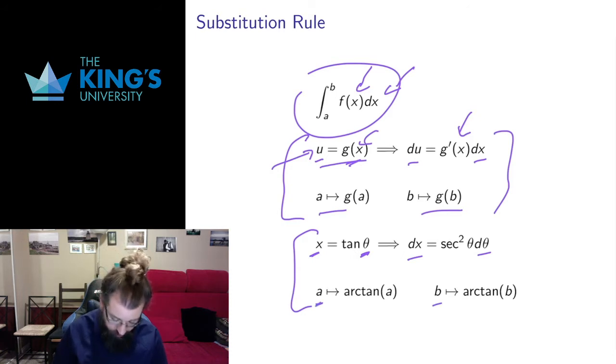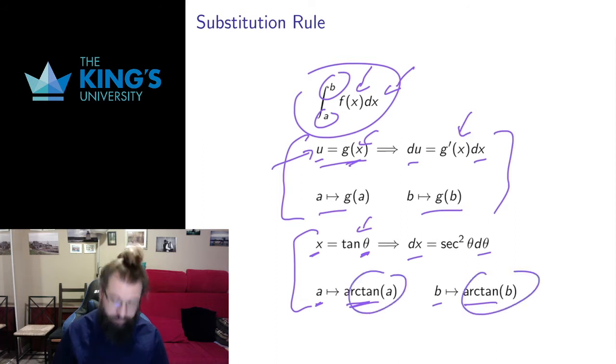So to change the bound here, I need the inverse of the substitution, because these are the bounds in the original variable, these are going to be the bounds in the new variable, and the new variable being the independent variable, I need the inverse function to get back to that independent variable.